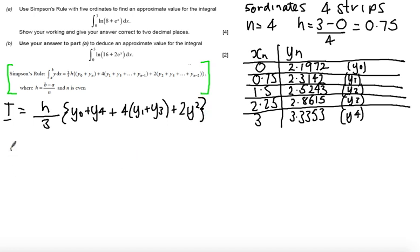And that's Simpson's rule as I'm going to use it for this question. So I get 0.75 over 3, times 2.1972, plus y4, which is 3.3353.